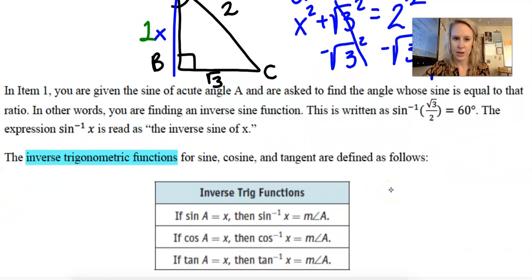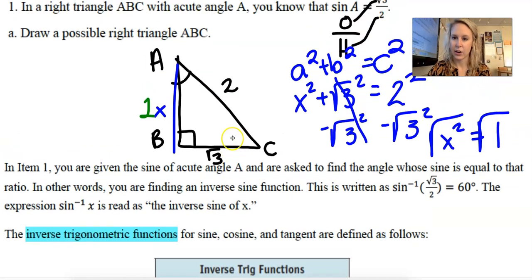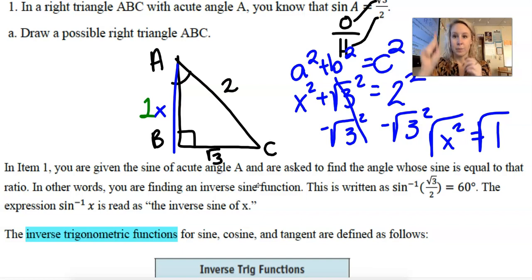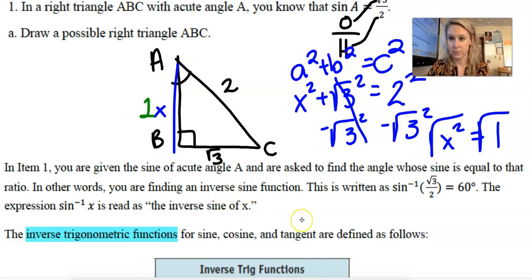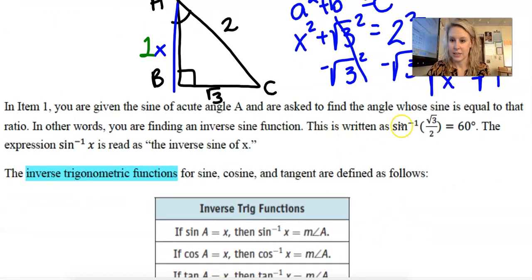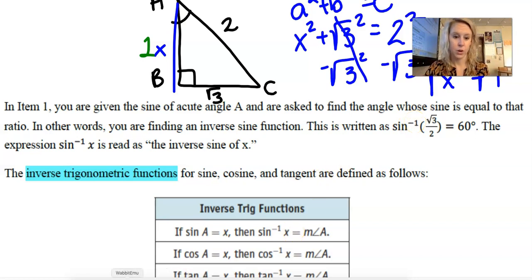In item one we're given the sine of acute angle A and asked to find the angle whose sine equals that ratio — we're finding the inverse sine function. Remember how adding and subtracting are inverses, multiplying and dividing are inverses, squares and square roots are inverses. Well, we're going to learn a new one: inverse sine, inverse cosine, and inverse tangent. It's written as sine with an exponent of negative one.